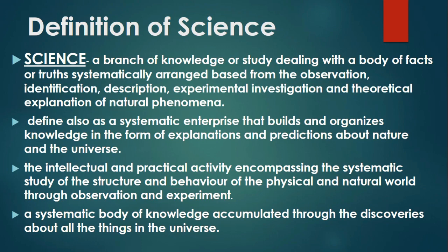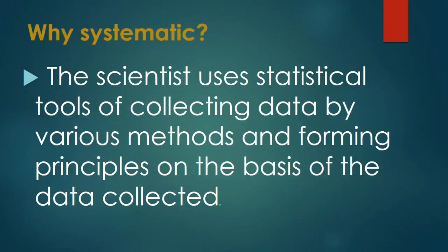As what you see, there is one word there which is repeatedly used in every definition. And the root word is system. Systematically, there is also systematic there. And the last one, systematic. Why is it that science is defined as a system? The process is a system. Why is systematic?